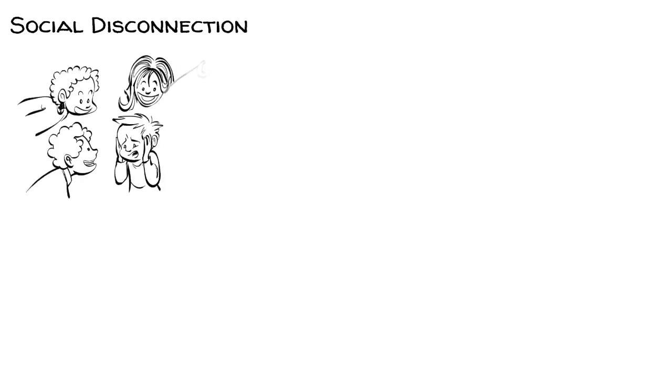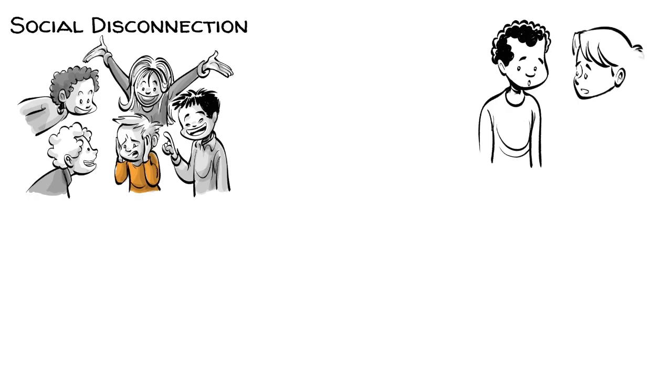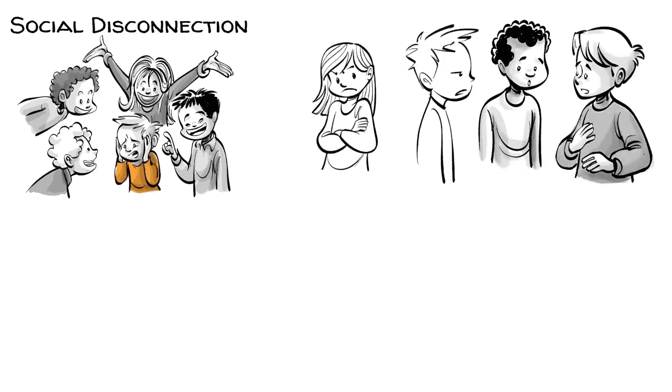Timo experiences social disconnection. He has trouble connecting with others because social settings overwhelm his sensitivity and desire for order. Because human emotions are incredibly complex and don't follow a set predictable pattern, Timo often finds himself misreading situations and upsetting people around him.